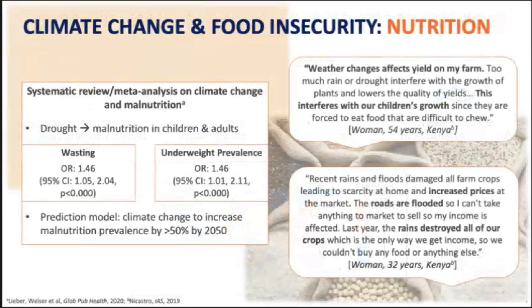In a meta-analysis, we found that drought conditions were associated with about 46% higher odds of wasting and underweight prevalence in adjusted analyses. In a prediction model, we estimated that climate change will increase the prevalence of malnutrition by greater than 50% by the year 2050. Quotes from a qualitative study in Kenya describe how participants talked about how loss of crops, animals, and income from drought and flooding affected their diet quality, and contributed to weight loss and stunting in their children.